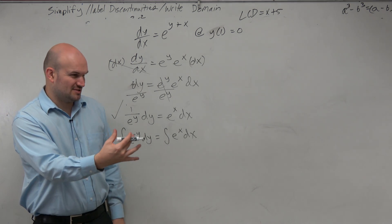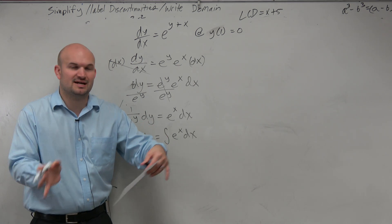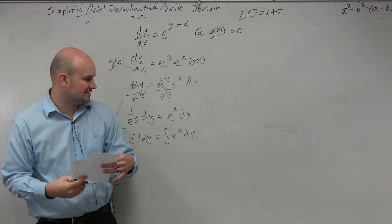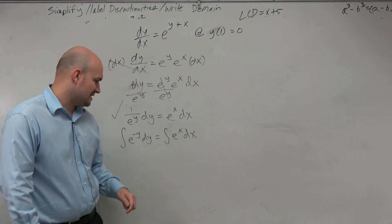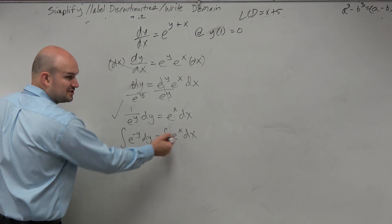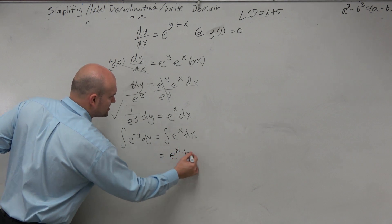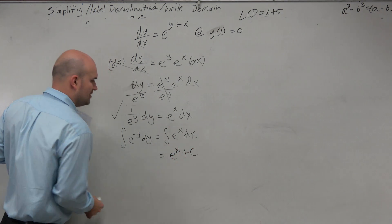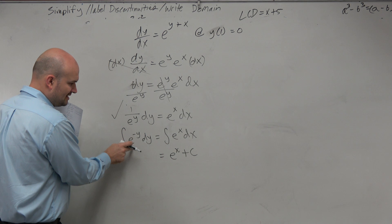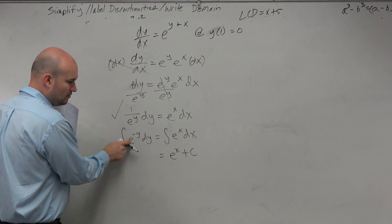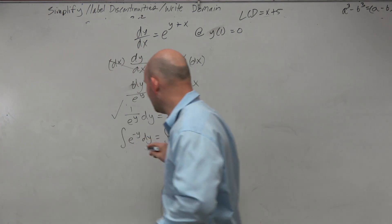We could add the plus C to both sides, but we know once you add plus C to both sides and subtract, you can just keep the C on the x side. So let's do the right side first because that seems really easy — that is just e to the x plus C, and that's going to absorb the C from the other side. Now the next thing is: well, what's the integral of e to the negative y?